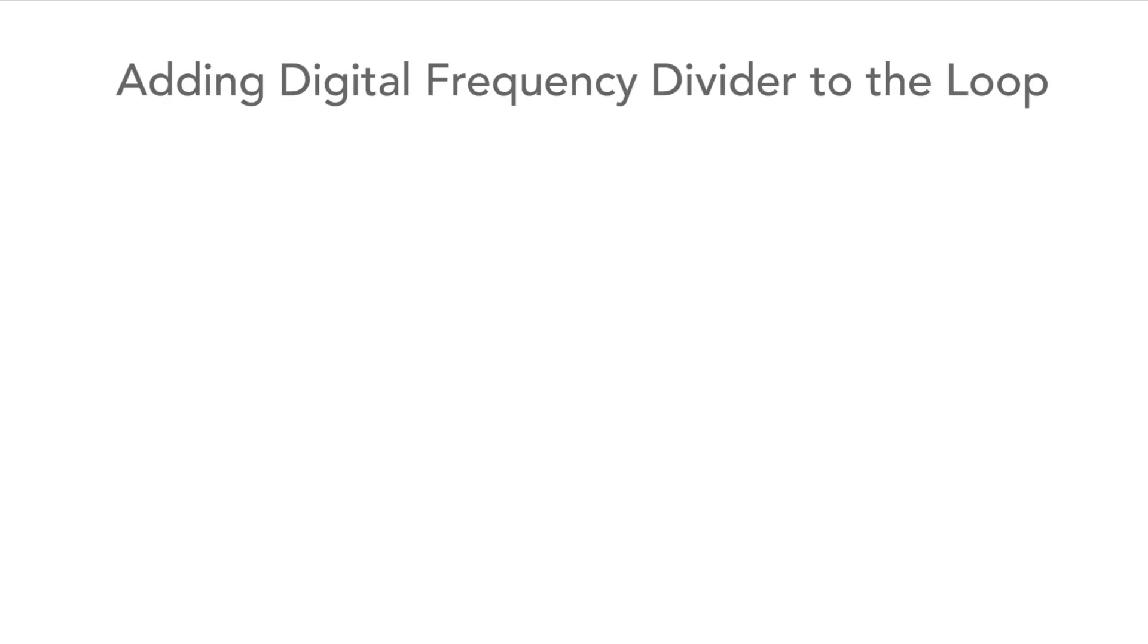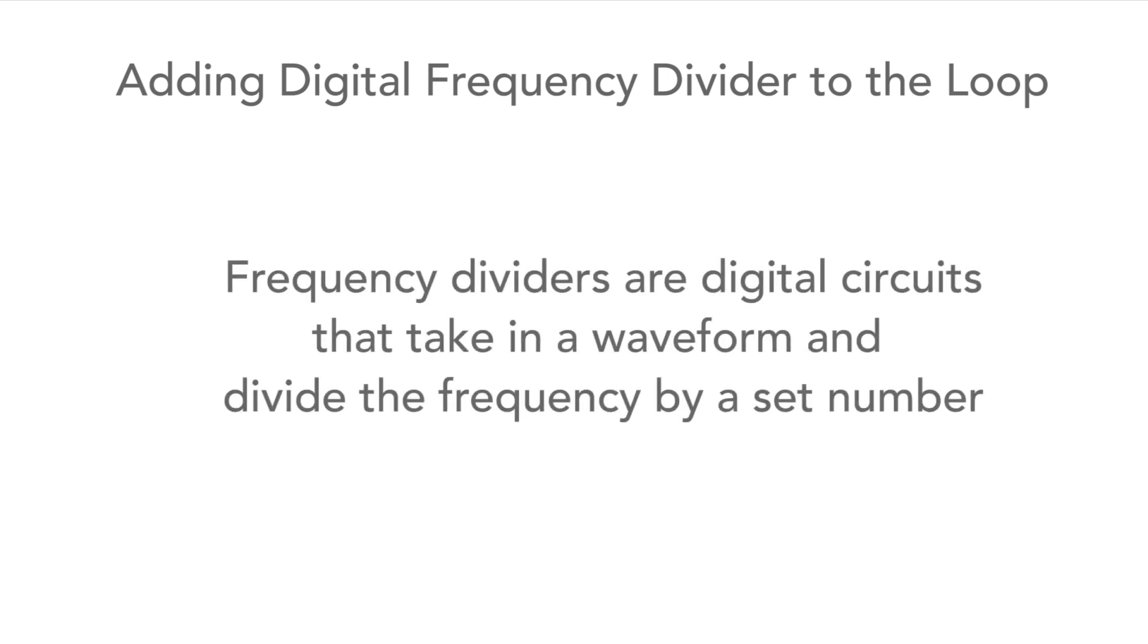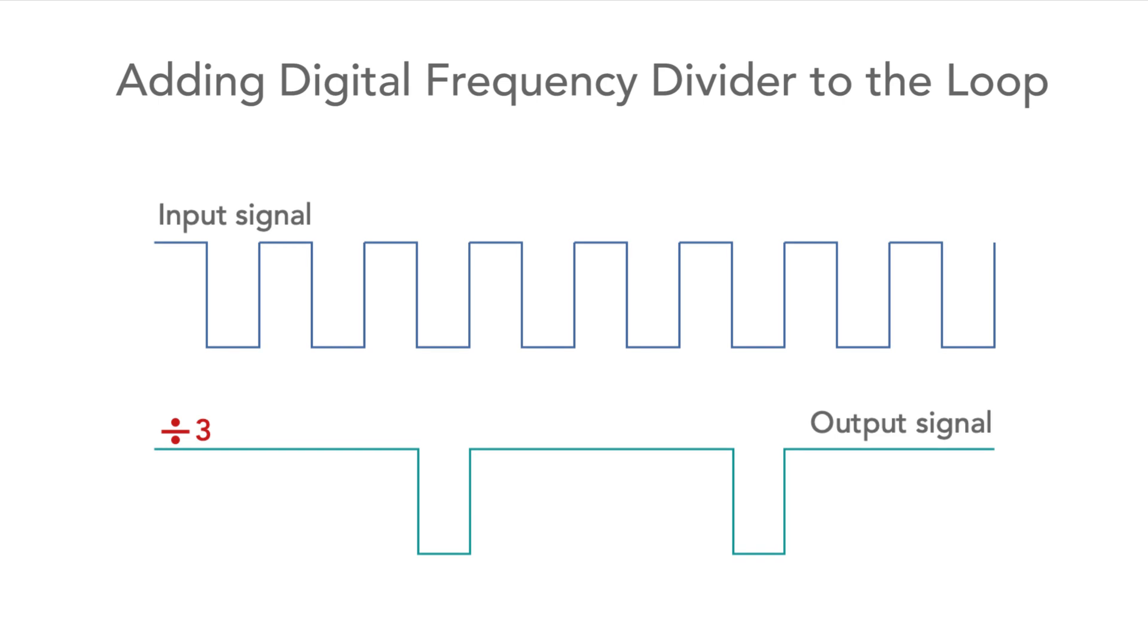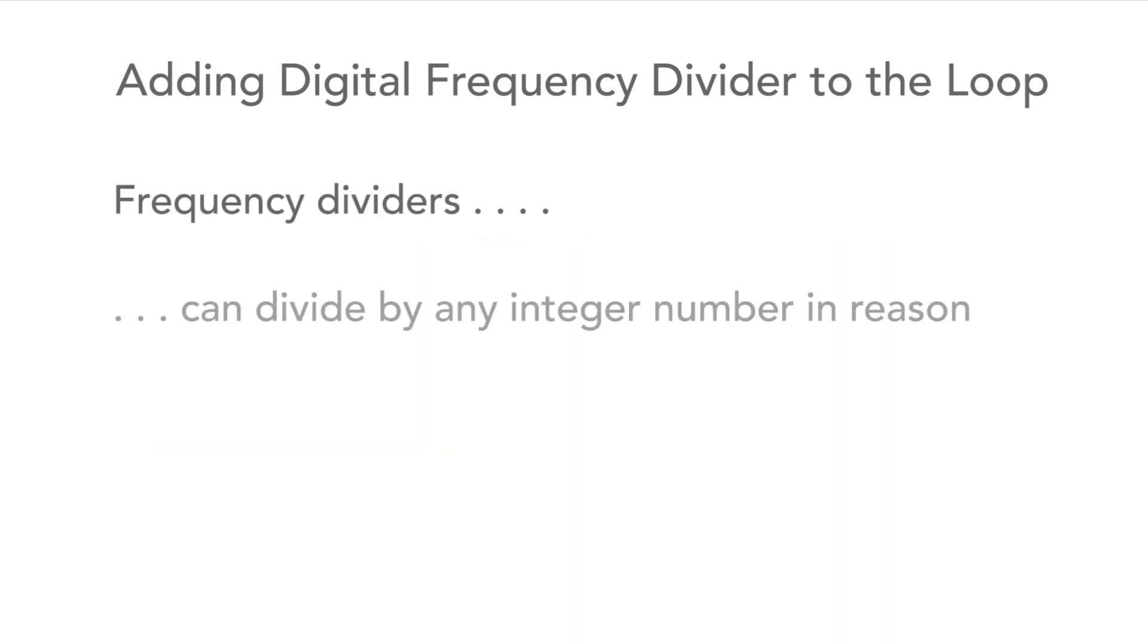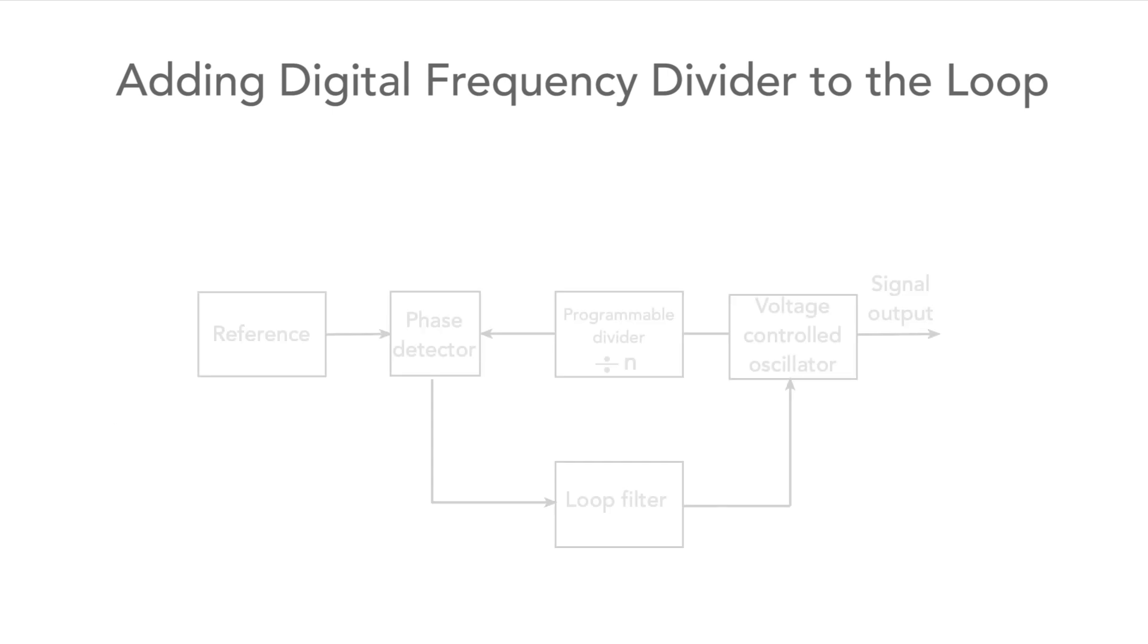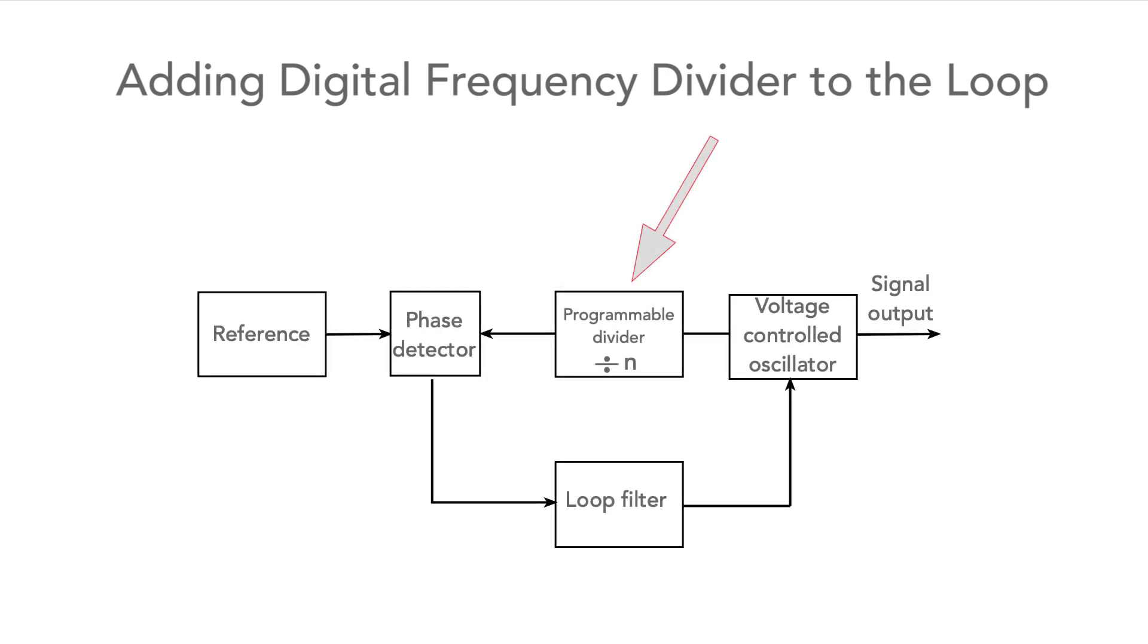Let's move on a stage and take a look to see what happens if we add a digital frequency divider into the loop. These dividers are digital circuits that take in a waveform and divide the input frequency by a certain number. Here we see what happens with a divide-by-3 circuit, but they can divide by any number within reason, and they can be fixed or even programmable. These dividers are added to the loop between the VCO and the phase detector, dividing the frequency of the VCO signal down.